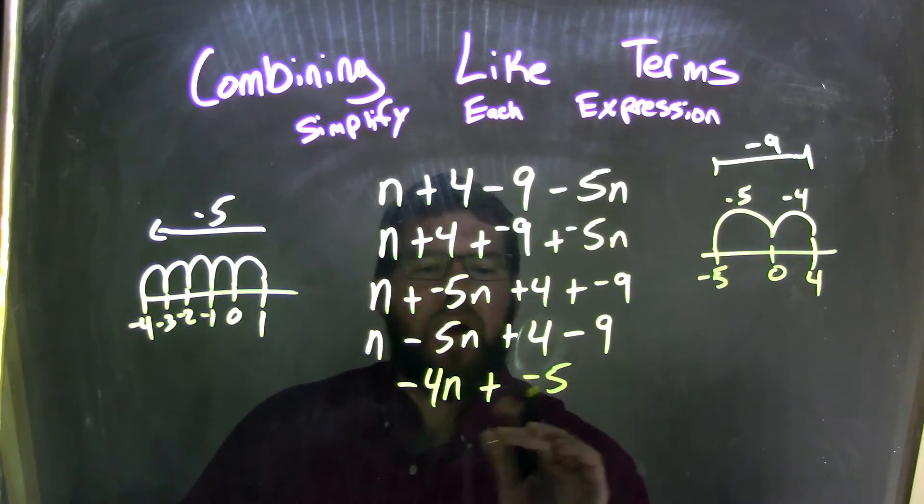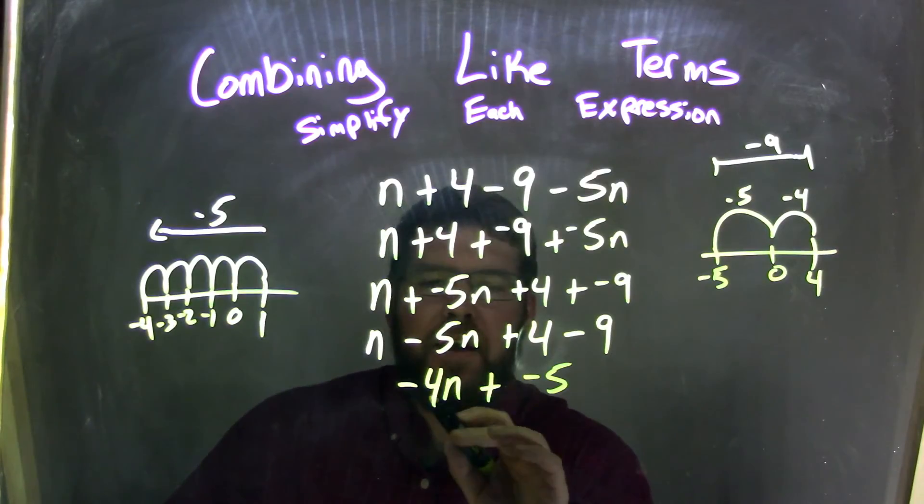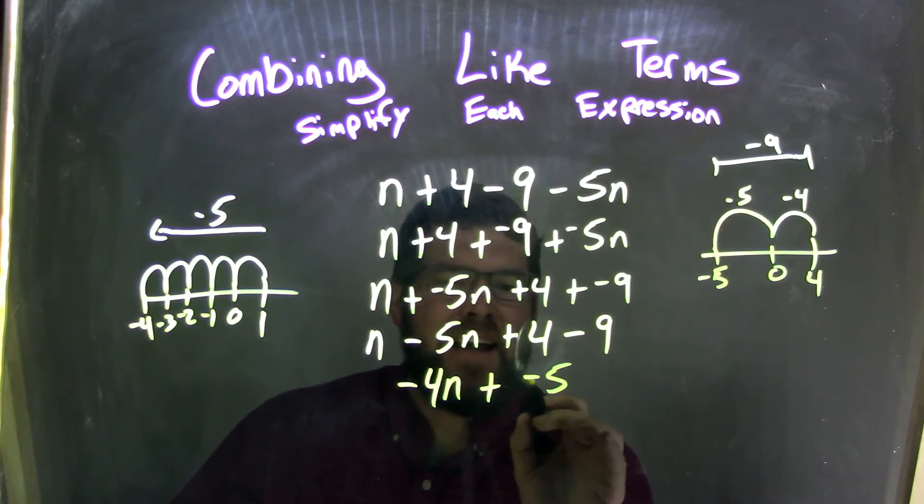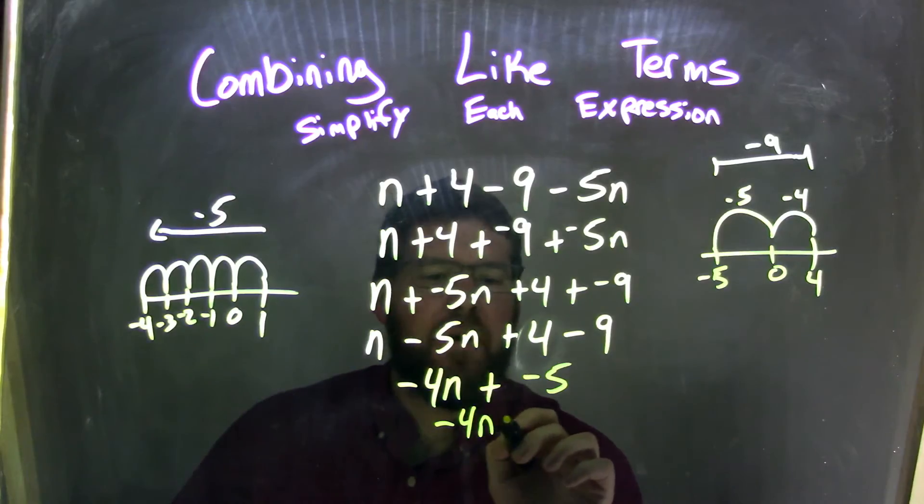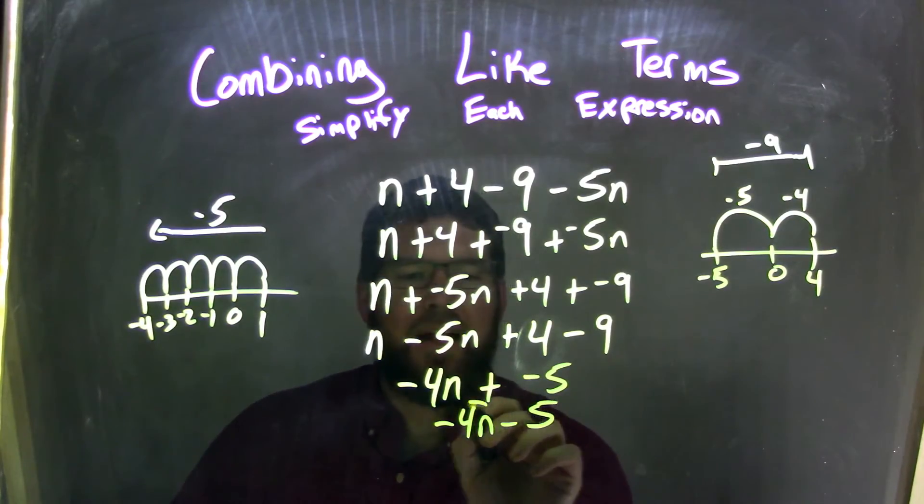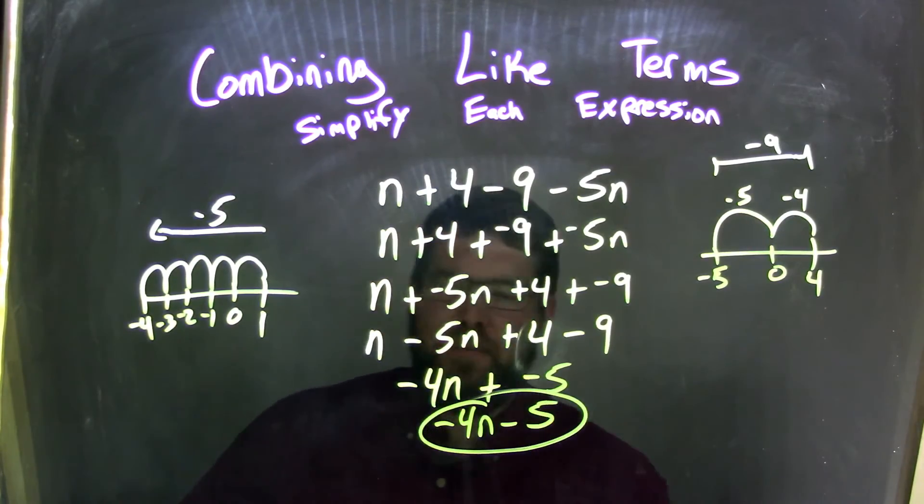Well, let's make this a little nice and neat. Negative 4n plus a negative 5, adding a negative, same thing as subtraction. So we have negative 4n minus 5, and that is our final answer. Long problem.